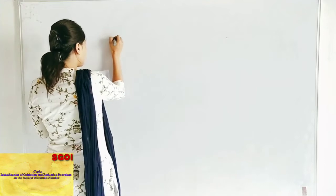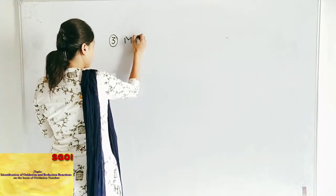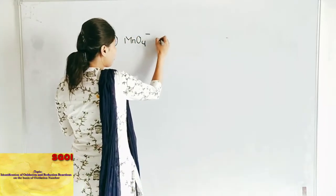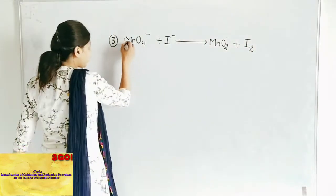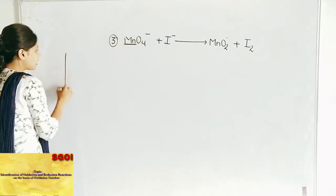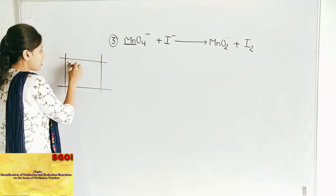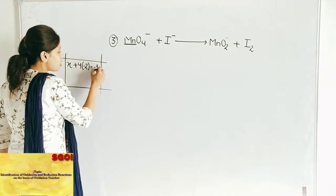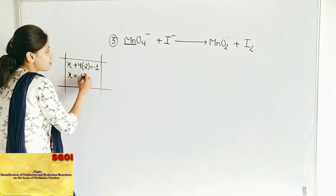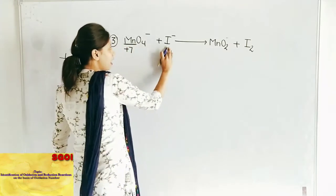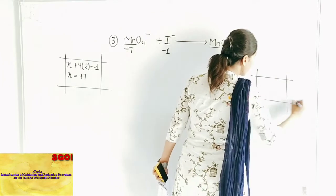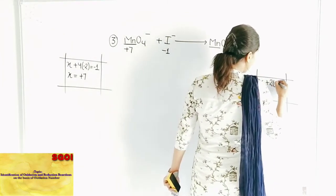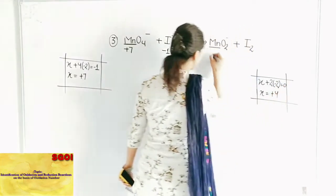Question number three: MnO4 minus plus I minus gives MnO2 plus I2. Write the oxidation number of each element. For MnO4 minus: X plus 4 times minus 2 equals minus 1, so X equals plus 7. For I minus, oxidation number is minus 1. For MnO2: suppose oxidation number of Mn is X; X plus 2 times minus 2 equals 0, so X equals plus 4. O's value stays fixed. I2 is in free state so its oxidation number is 0.